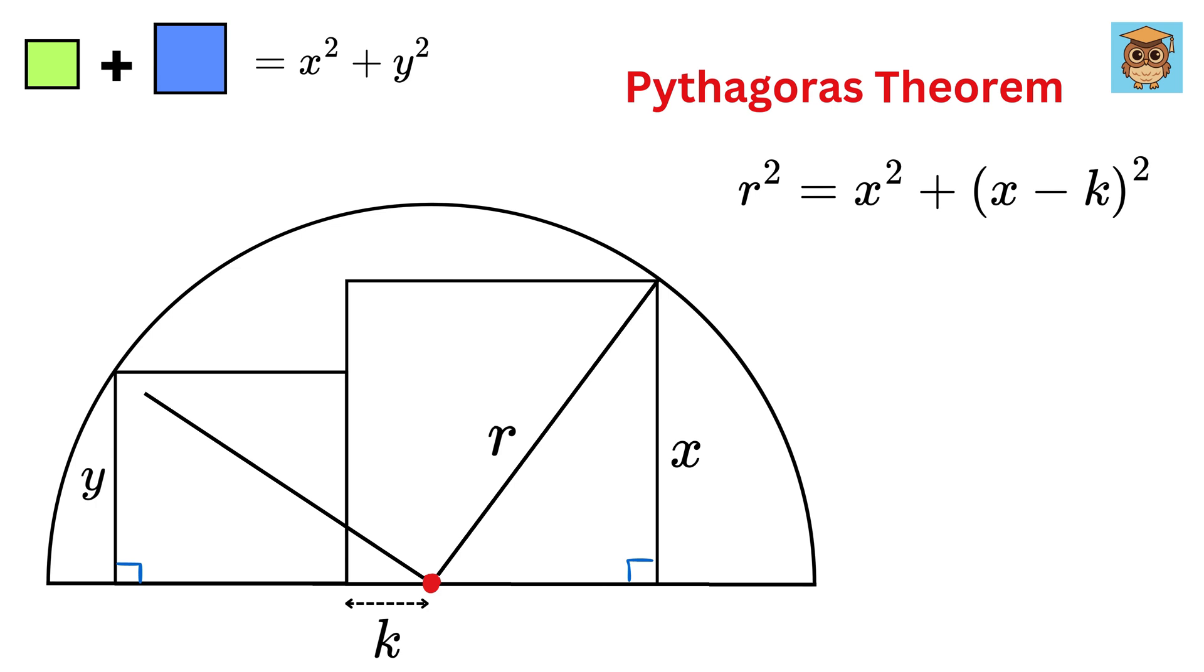Now draw this line such that this is also a right-angled triangle. Again, what will be this length? It will be the same as the radius of this semicircle, right? So put R here.